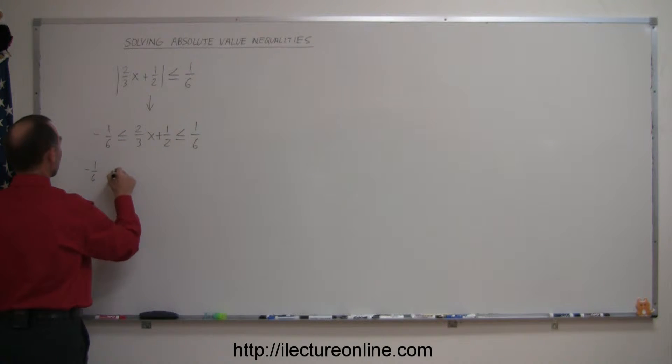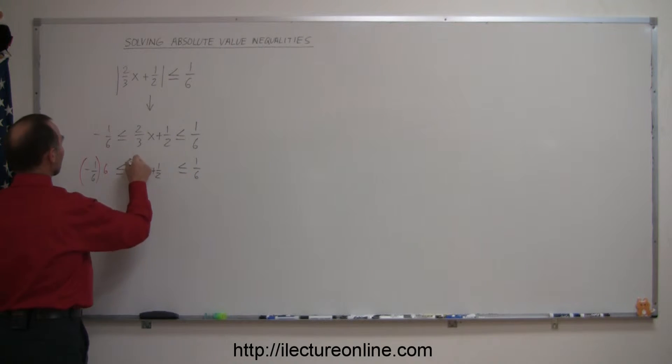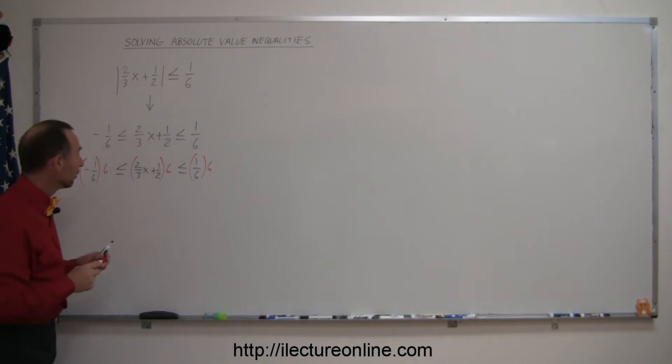So we have minus one-sixth, less than or equal to two-thirds x plus one-half, less than or equal to one-sixth. Notice I left some room because that way I can go like this, multiply this by six, multiply this by six, and multiply this by six. Remember, you have to do the same to everything on both sides of the inequality symbols.